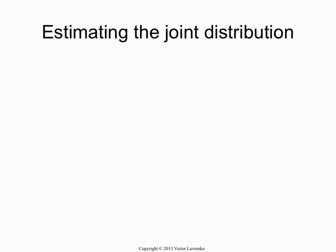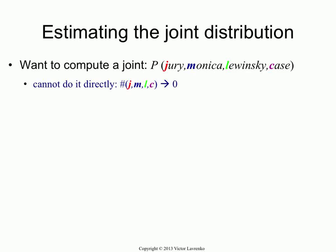So what we need to do is we need to estimate joints. We need to estimate the joint probability of a bunch of words occurring together. And it's not as trivial as we would like. We cannot estimate it directly in general.